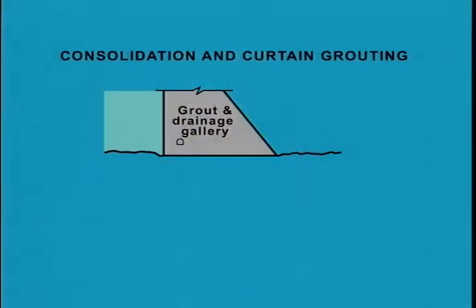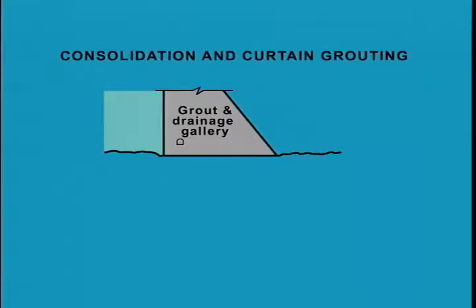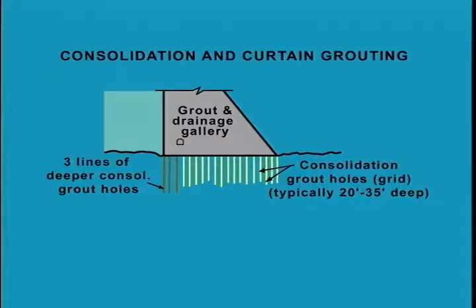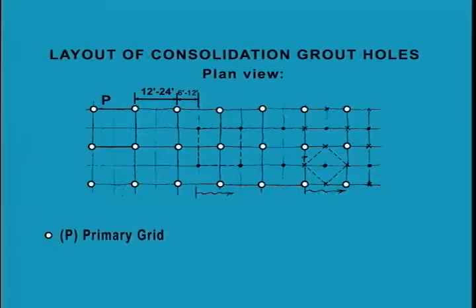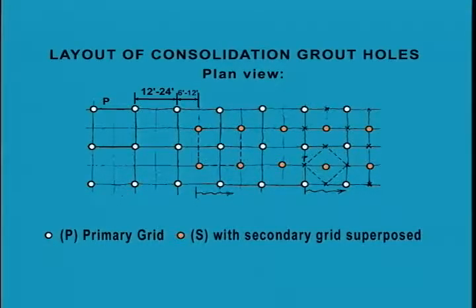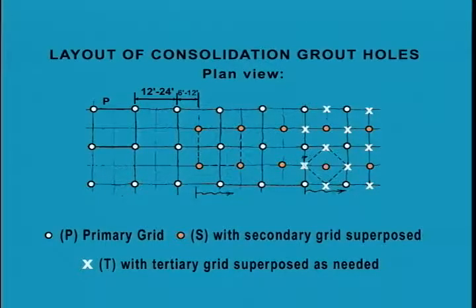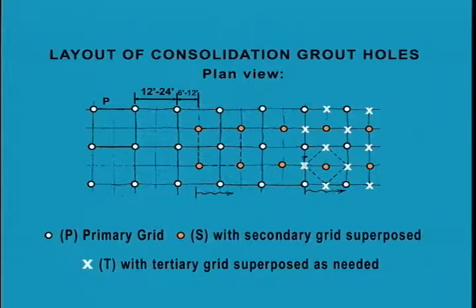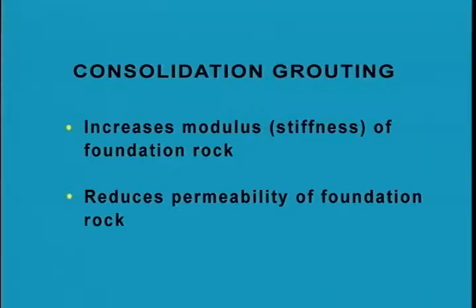Consolidation grouting, also called blanket or area grouting, consists of grouting on a predetermined grid pattern to a shallow depth in the range of 20 to 35 feet. The grid spacing for primary holes may range from about 12 to 24 feet. Secondary holes may be drilled and grouted in the center of the grid as mandatory holes or as required if grout admission of an adjacent primary hole exceeds a specified quantity. Similarly, tertiary holes may be added where secondary holes have large grout admissions. Consolidation grouting accomplishes two things: it increases the modulus or stiffness of the rock mass and it reduces the permeability, both good things for the dam foundation.